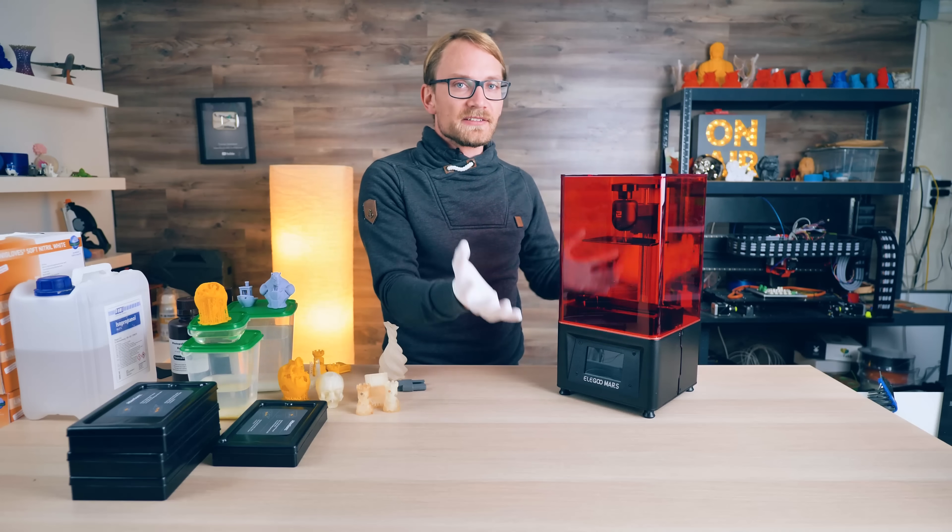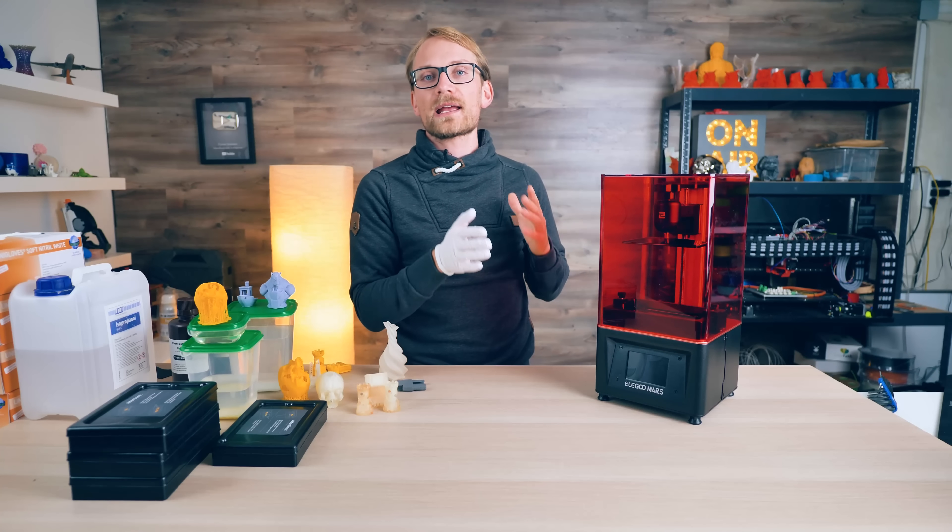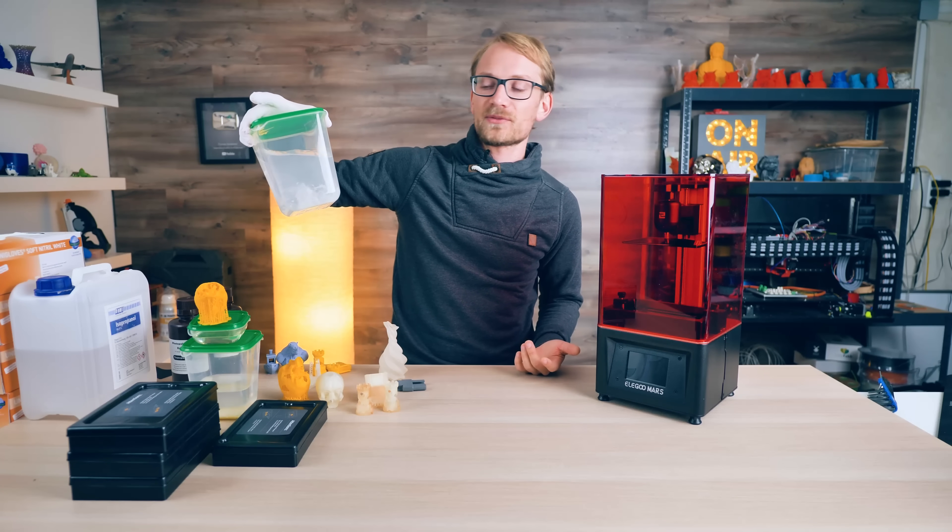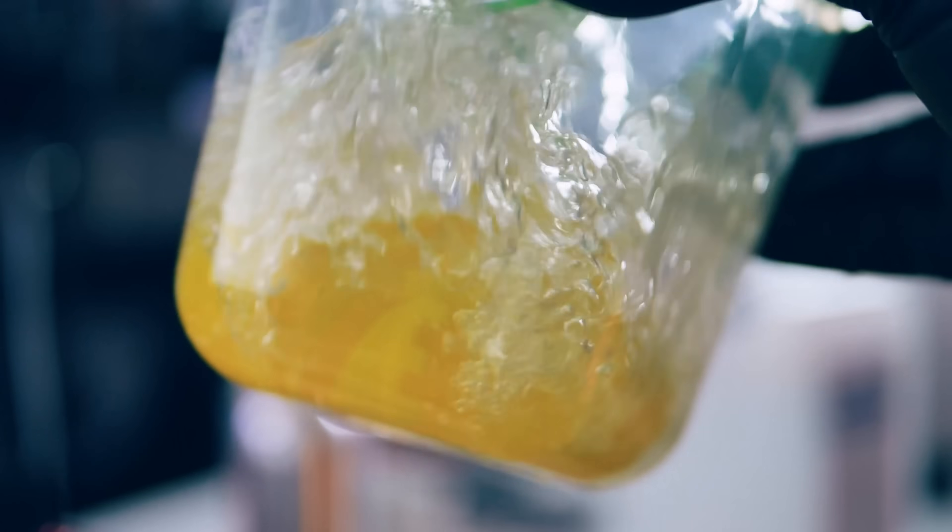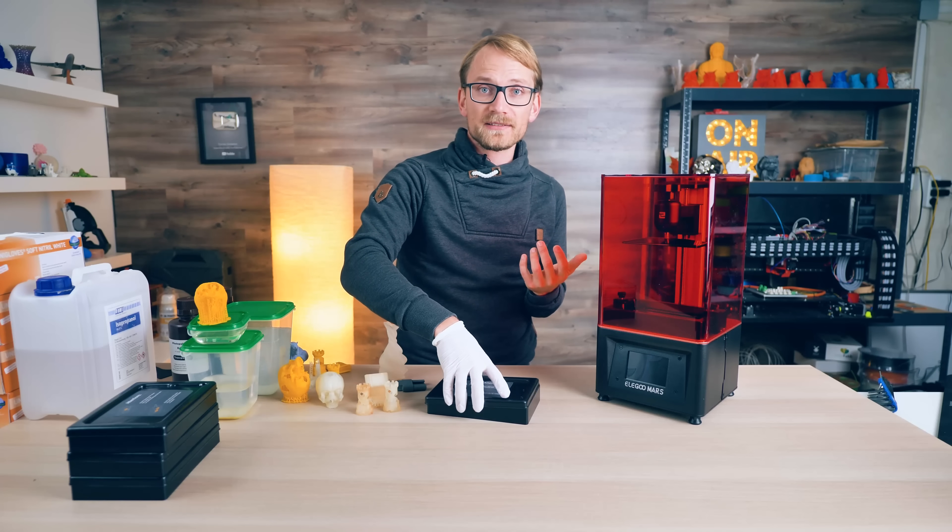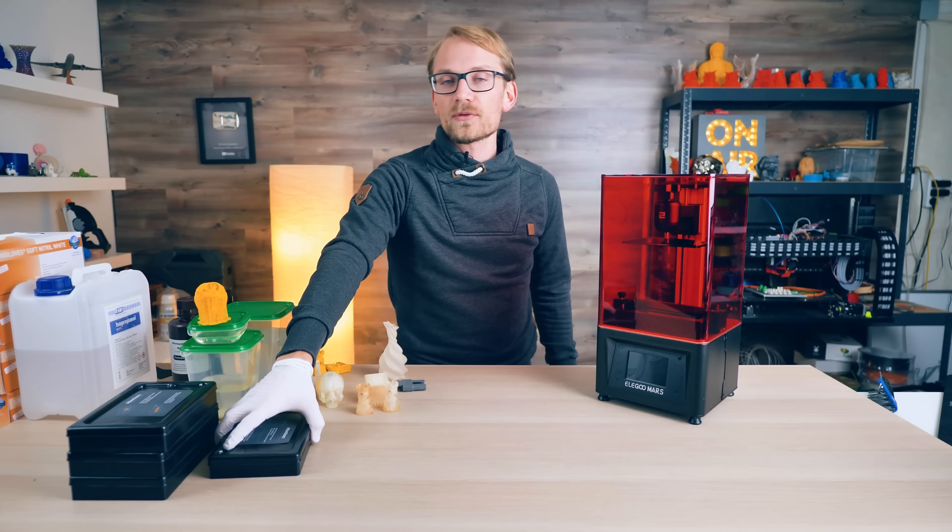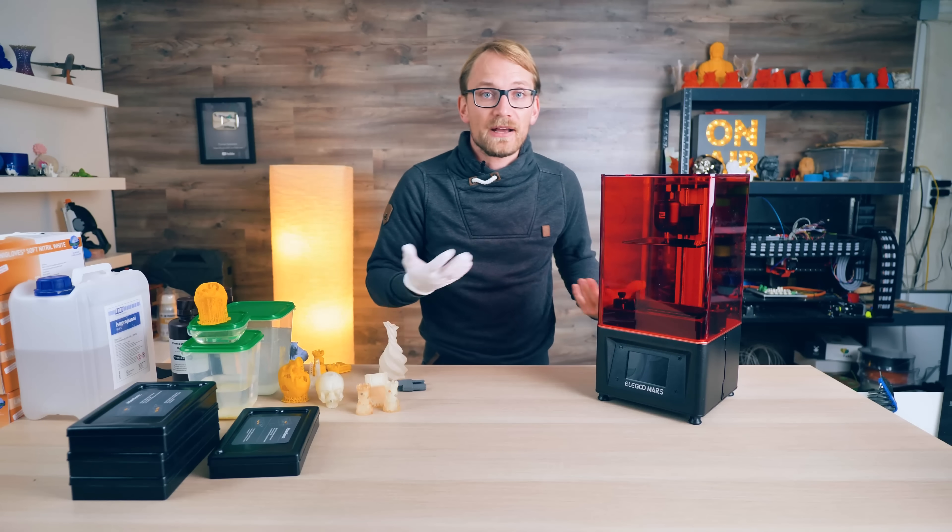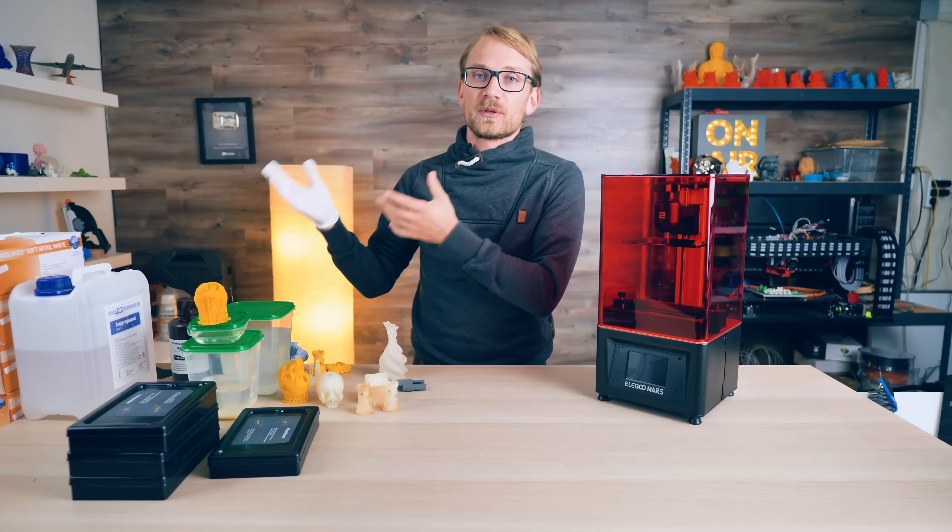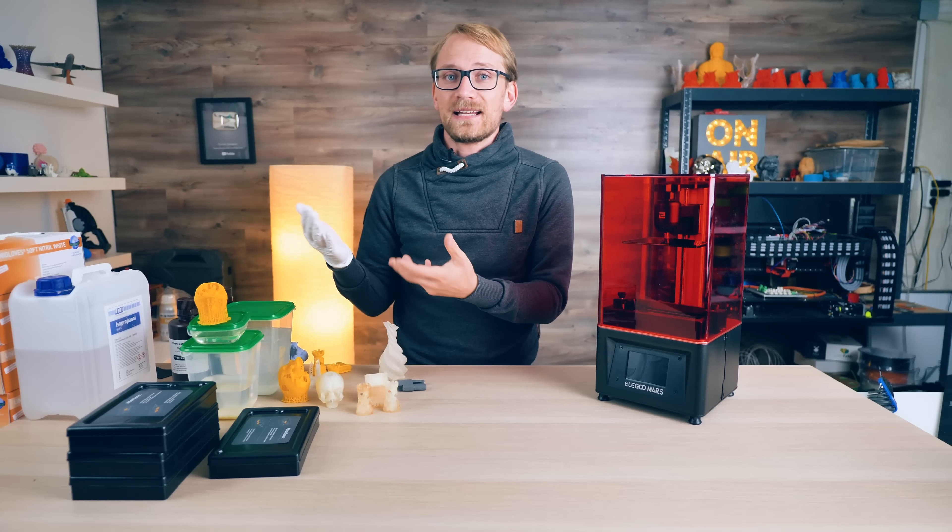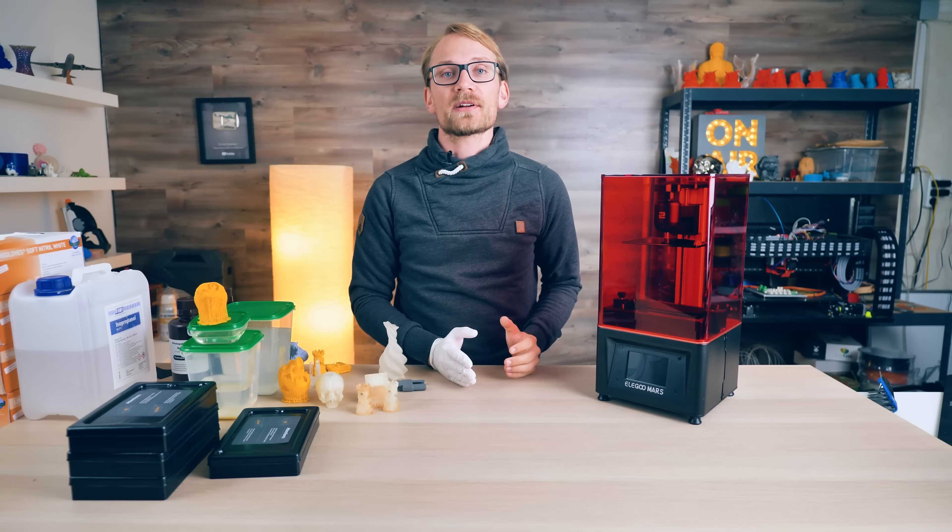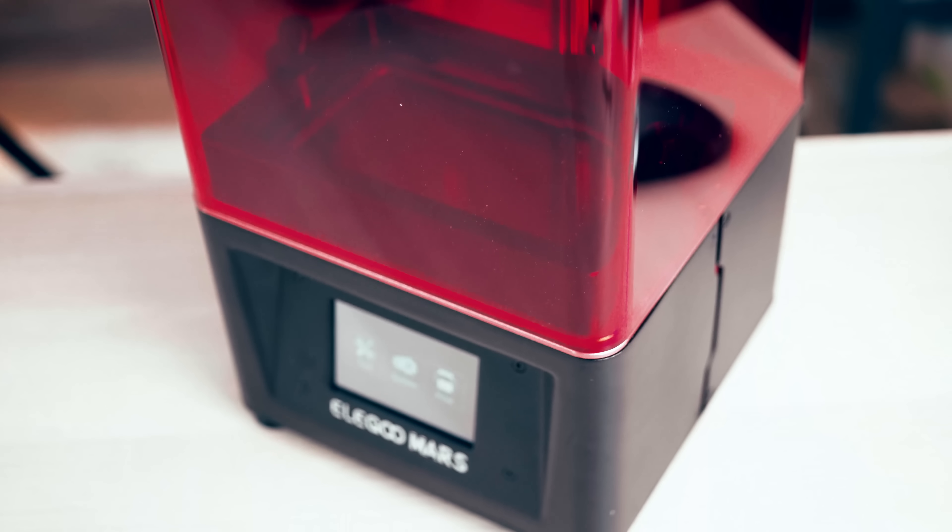So really, a good system for resin printing should also factor in some way of cleaning the parts. You know, Ikea plastic containers with IPA probably isn't that great of a solution. It should account for resin handling, which Elegoo are actually doing quite well with the VAT packs, and it should also include a way to correctly cure parts. At least, I think it should. And that makes it hard to compare a resin printing engine with a filament printer, where you don't really need anything else but the printer itself to produce parts. But still, if you're looking for just a resin printer, the Mars is a super-solid choice right now.